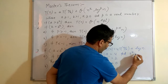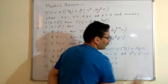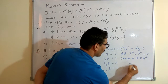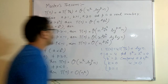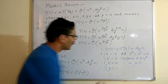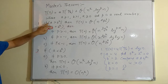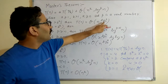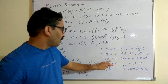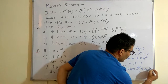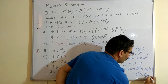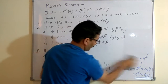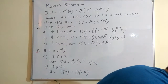Find b^k: b^k means 2 raised to power 0, which equals 1. Now compare a and b^k: a is equal to 4 and b^k is 1, so 4 is greater than 1, meaning a is greater than b^k. Then apply Case 1: since a > b^k, T(n) is equal to theta of n raised to log base b of a.